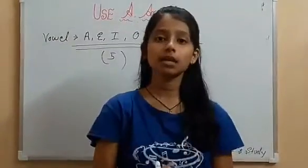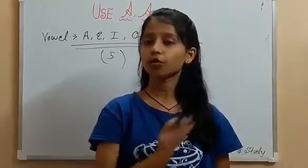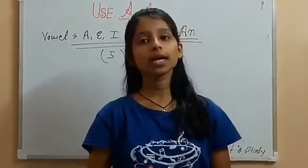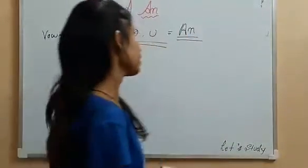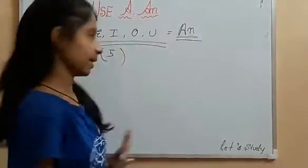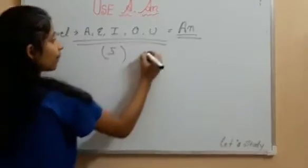You don't need to do anything, just remember how many vowels. The vowels are 5 and they are A, E, I, O, U. Then remember that we will use An. Let's write apple.